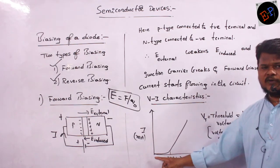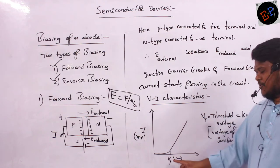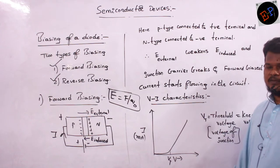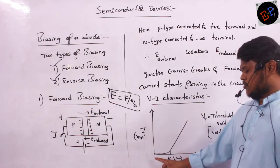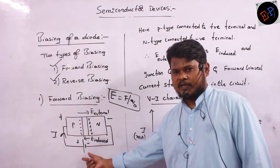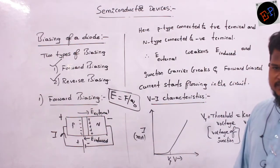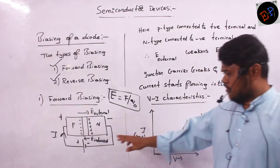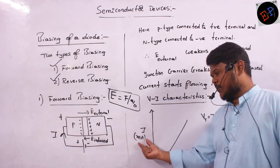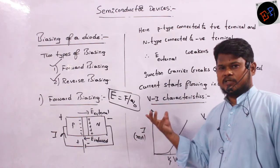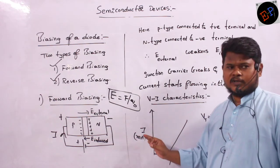From 0 to the threshold (knee) voltage, there is no rise in current. At knee voltage, current suddenly rises. The reason: until this point the induced electric field was stronger than the external electric field. When these two electric fields become equal, current starts rising suddenly. In forward biased condition, the amount of current is in milliamperes. In reverse biased condition, you will see microamperes — thousand times smaller.